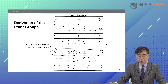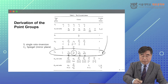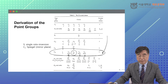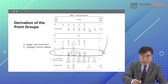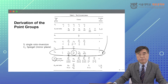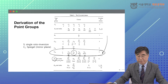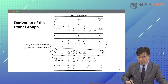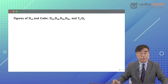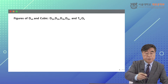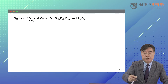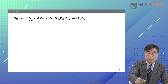Now let's go to a slightly more complicated one: DNH and cubic. DNH and cubic is an n-fold dihedral group, and I have to put a horizontal mirror plane. Figures of DNH and cubic — first the simple one.